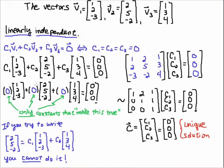So if you try to write, for example, take the vector 2, 5, minus 2 — if you try to write it as a linear combination of the other two vectors, you can't do it. There's no way that you can find numbers C1 and C2 that will make this true. You might think, what if I take C1 and C2 equal to 1, because 1 plus 1 is 2, 2 plus 3 is 5 — but minus 3 plus 4 does not equal minus 2. You could try to play that game all day and you're not going to make it true. That's how this linear combination relates to linearly independent: it means that each of these vectors cannot be written as a linear combination of the remaining two vectors.